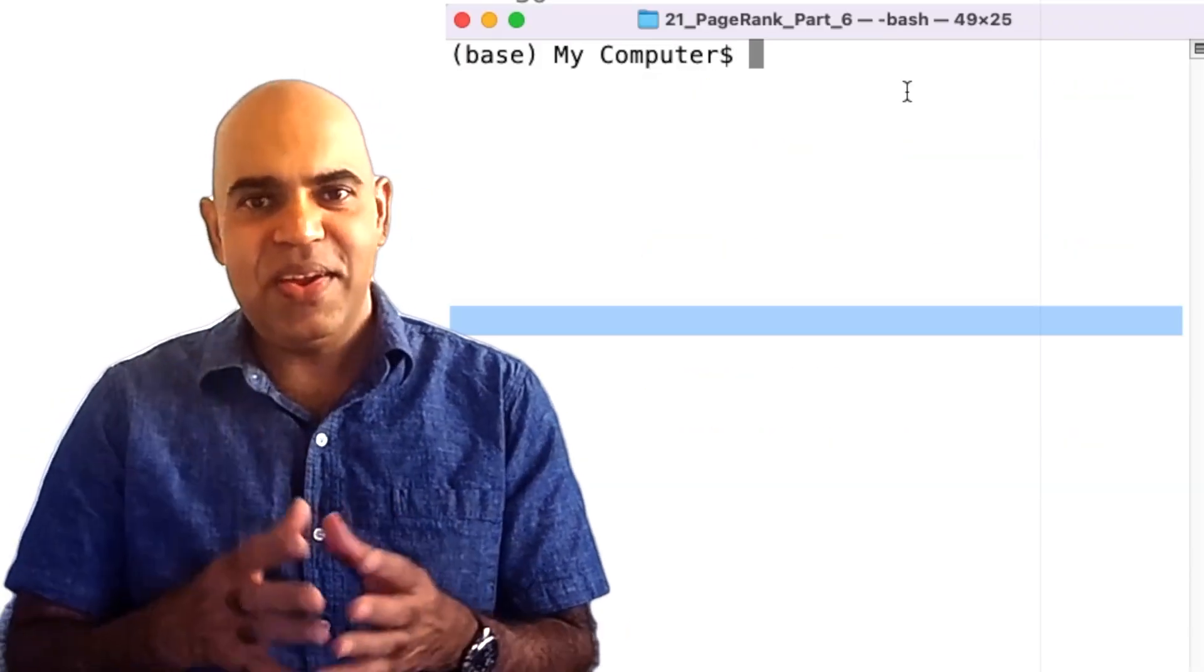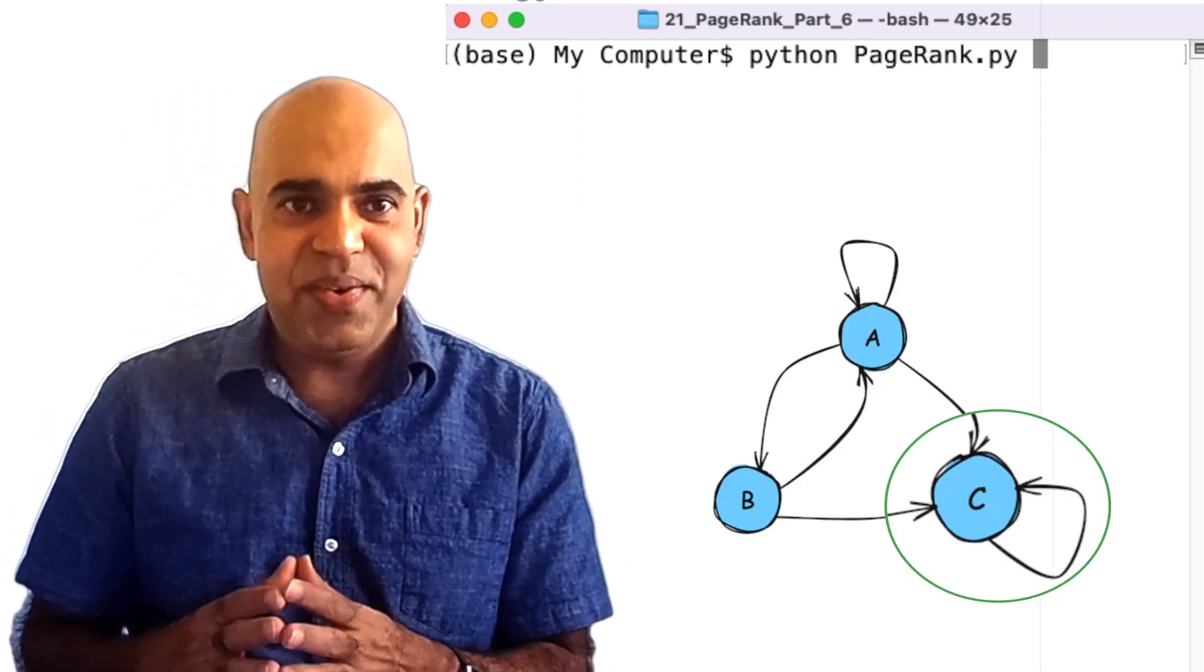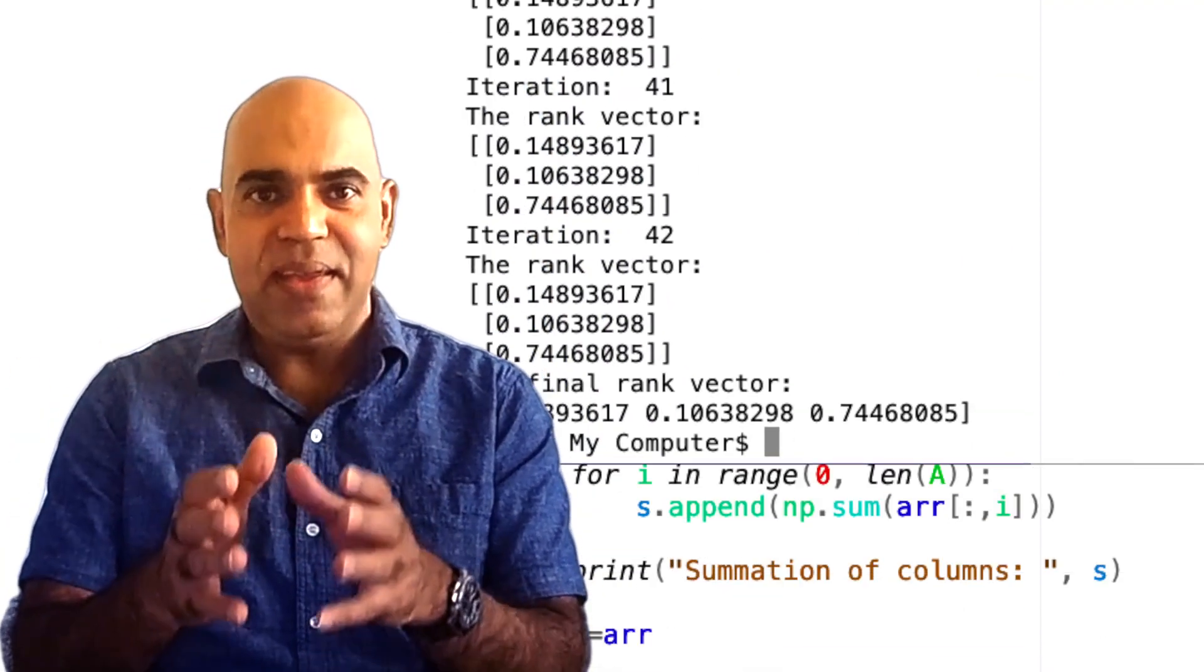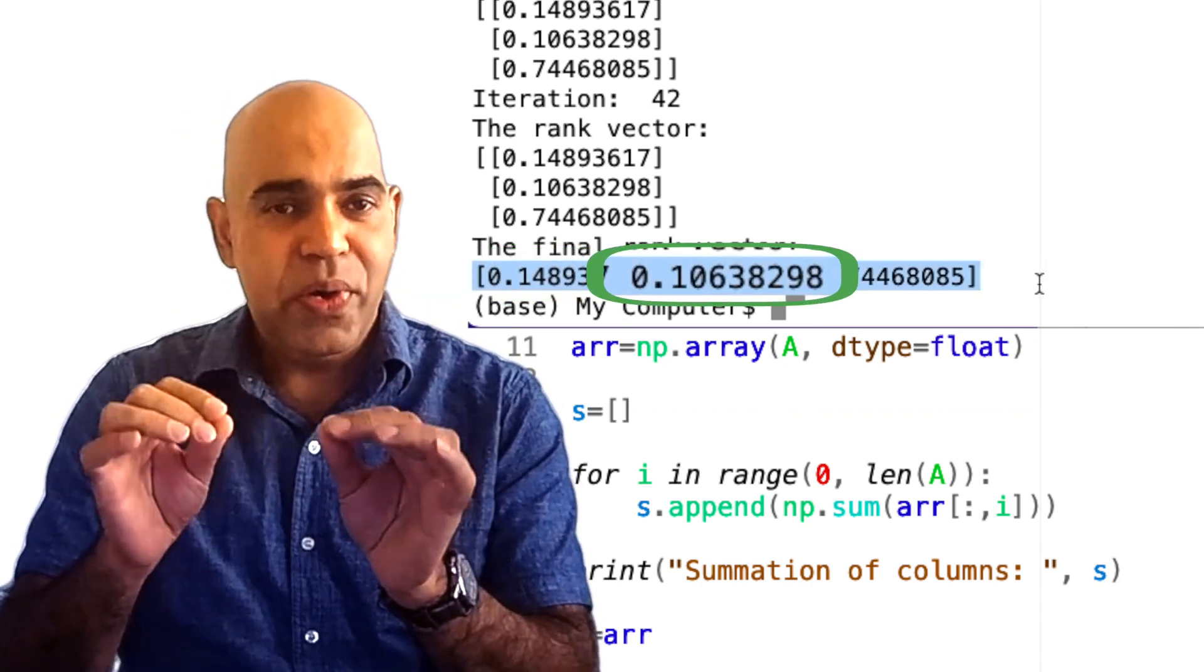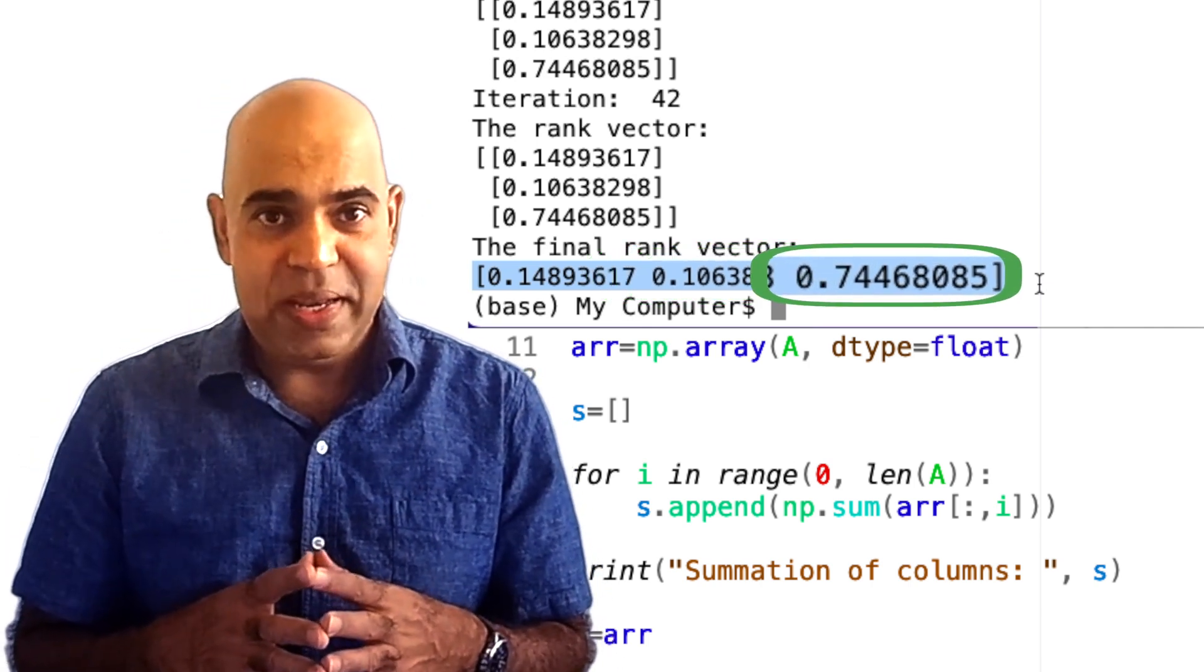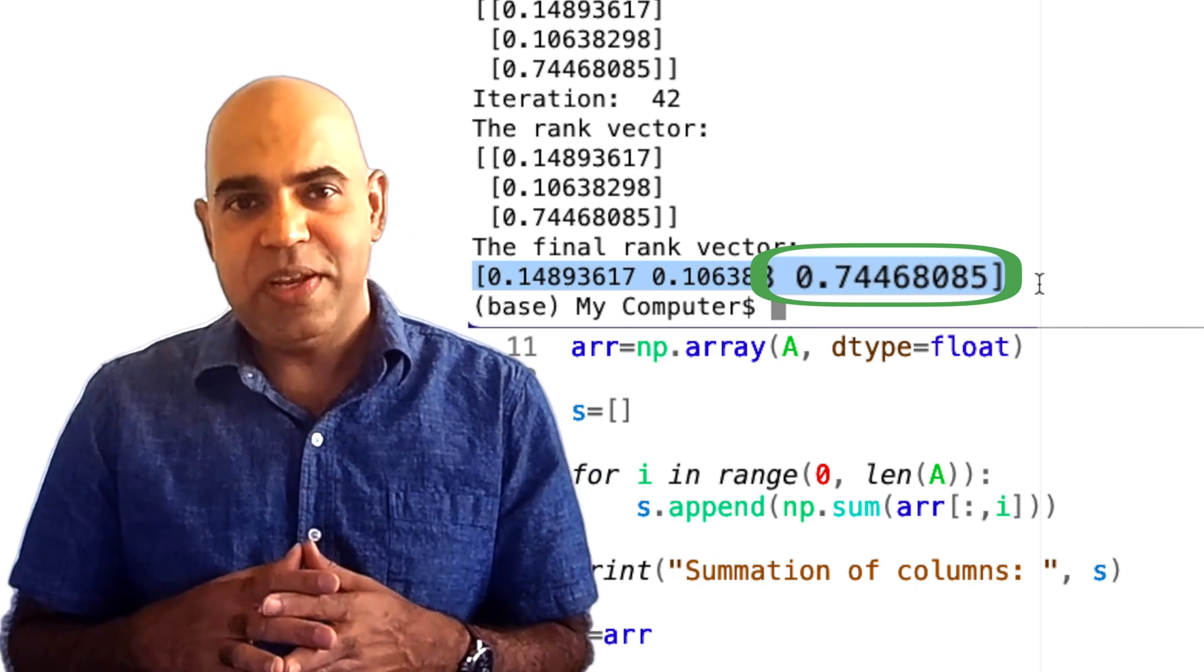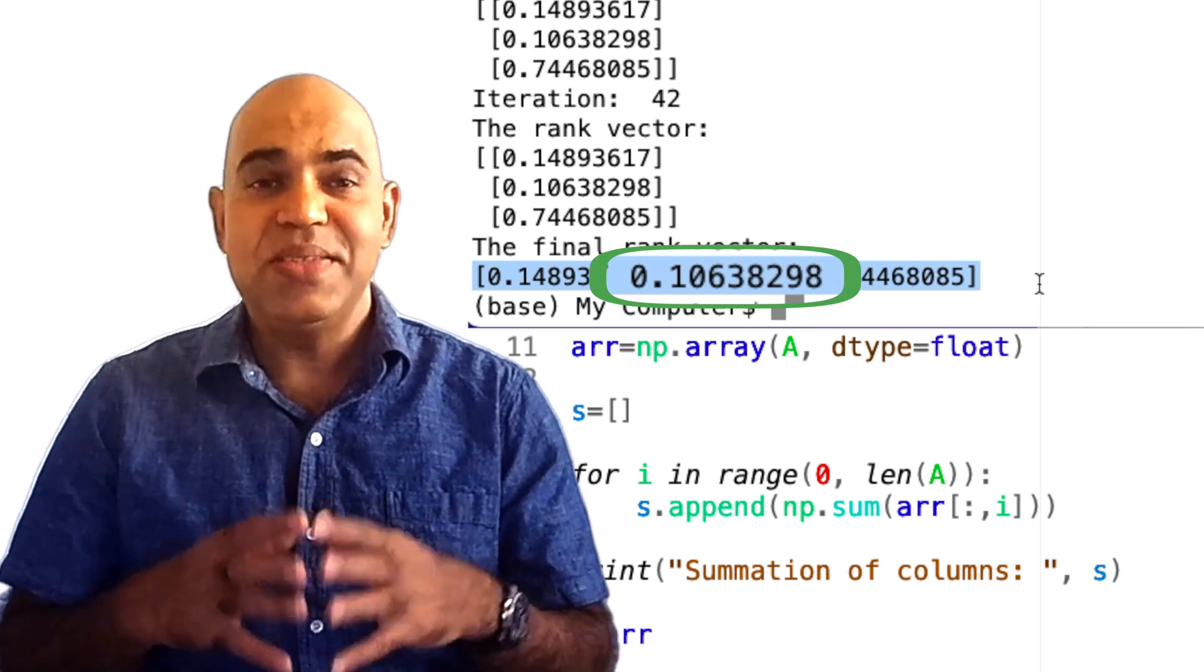Notice that running the code with the adjacency matrix of the internet that had this spider trap, with beta equals 0.8, the page rank probability of website A is 0.14893617, website B is 0.10638298, and website C has a page rank probability of 0.74468085. That means web page C is the most important one, then web page A, and then the least important website is web page B.